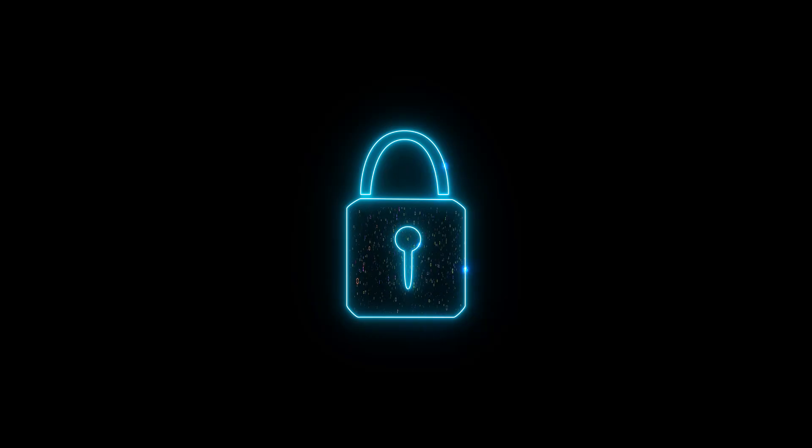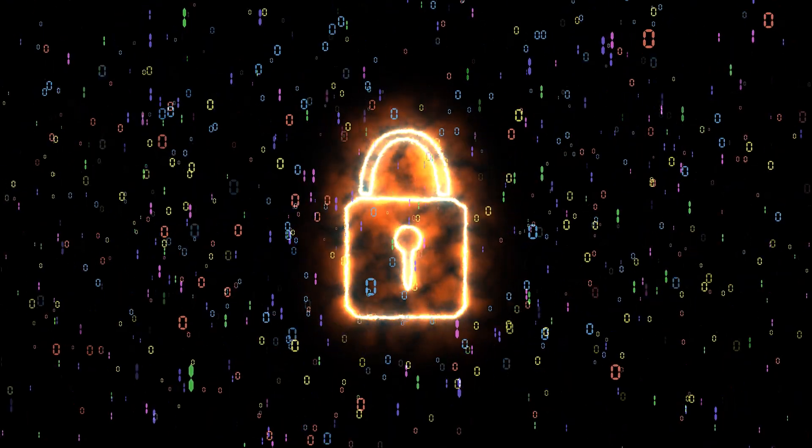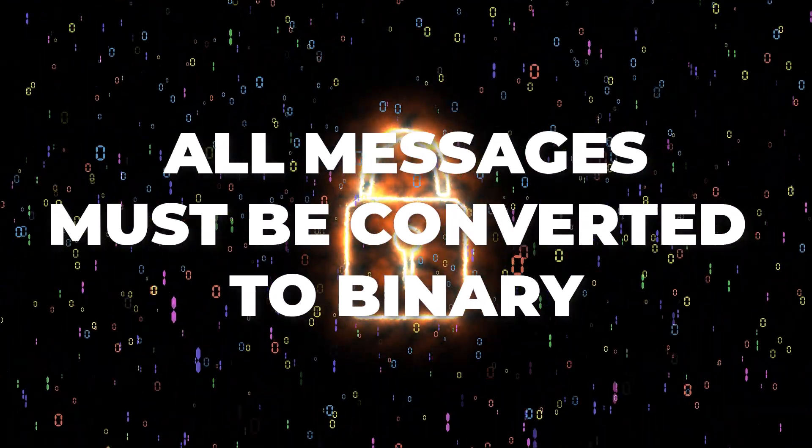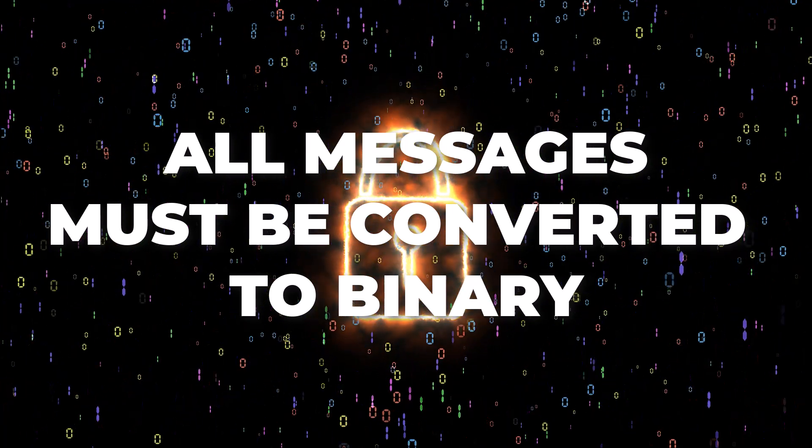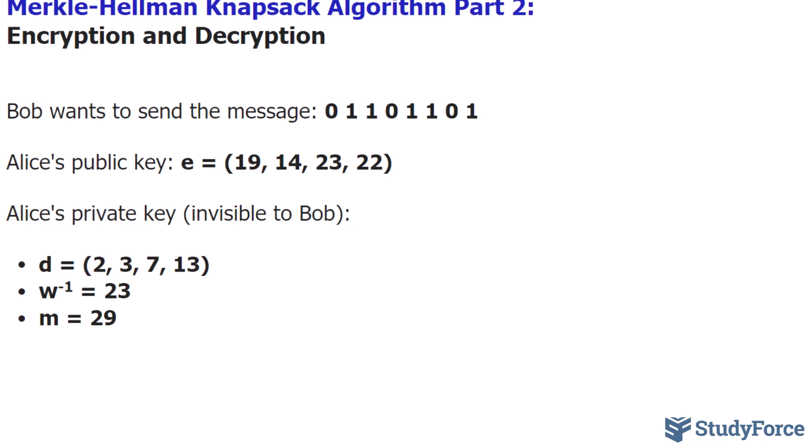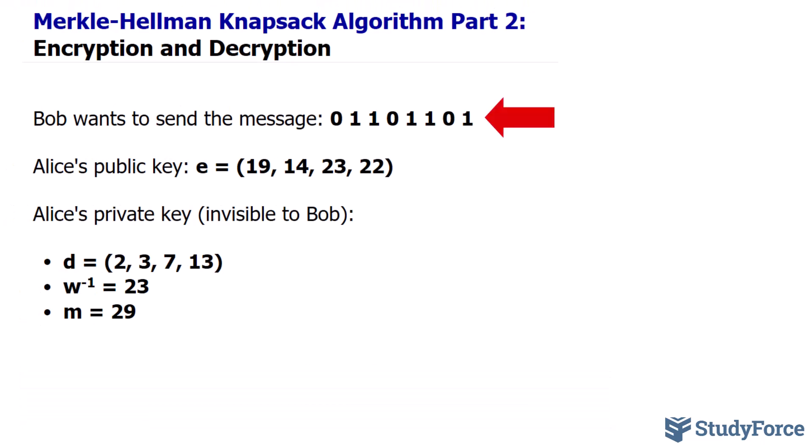Before we get started, it's important to note that with the Merkle-Hellman-Knapsack algorithm, only binary messages can be sent. This means that the message must be composed of binary digits, zeros and ones, for it to work. So suppose Bob wants to send a binary message, 01101101, privately to Alice. Interestingly, this binary number translates to the decimal number 109 when converted.